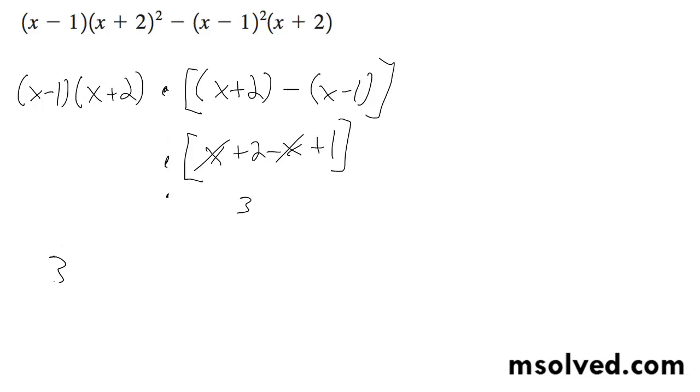And that simply becomes 3 quantity x minus 1, x plus 2. And that's it.